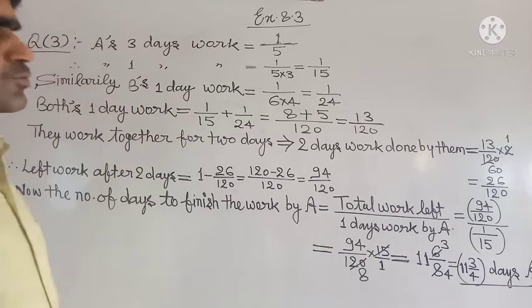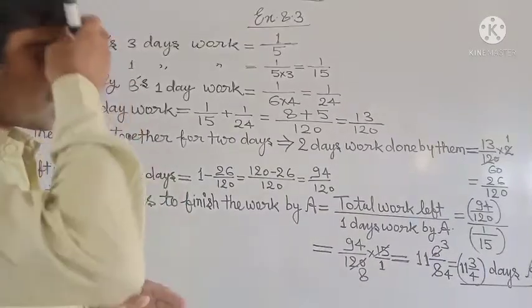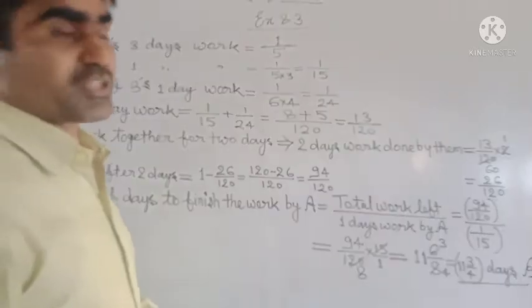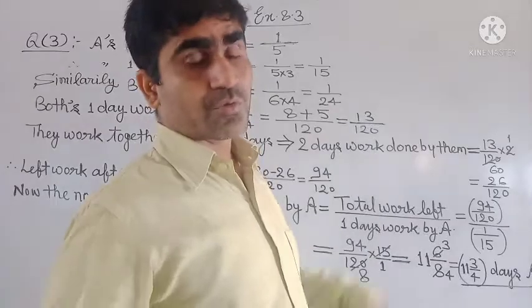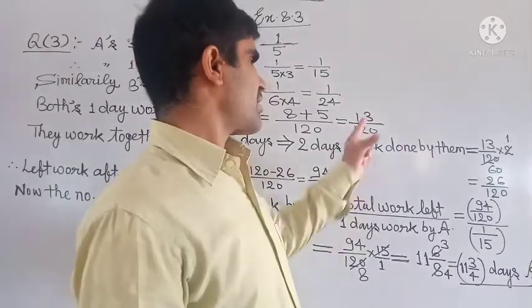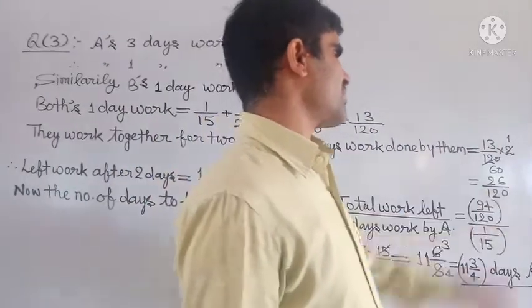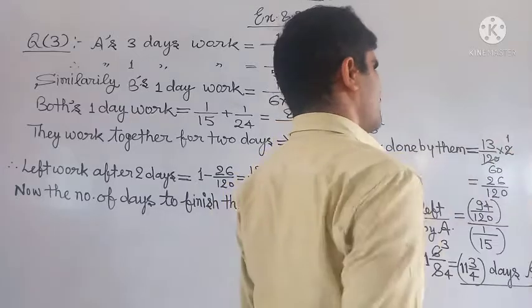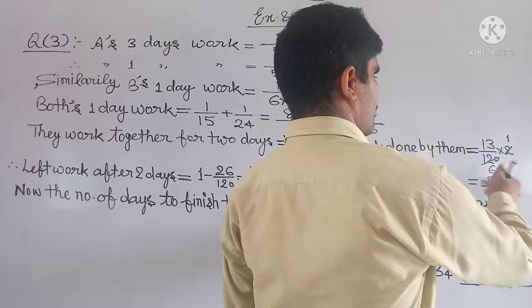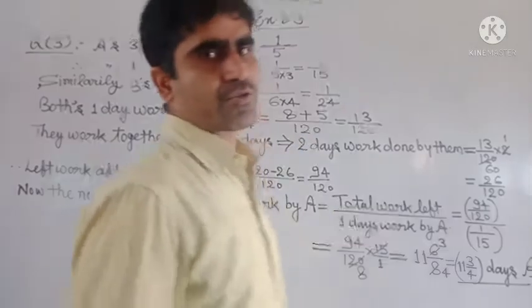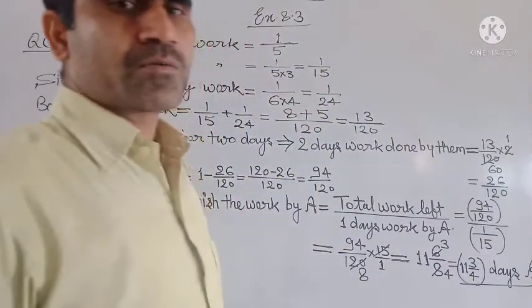They work together for two days. Now they both meet and work together. The work done by them in two days: two times their one day work, which is 13 upon 120. So 26 upon 120 is the 2 days work.